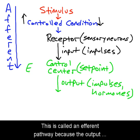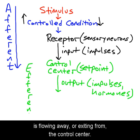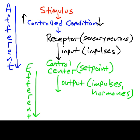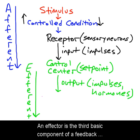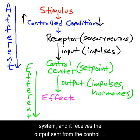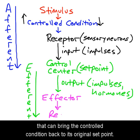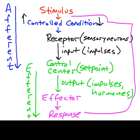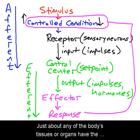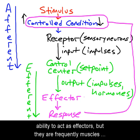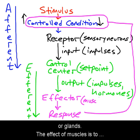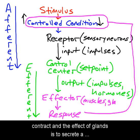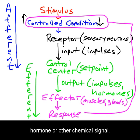This is called an efferent pathway because the output is flowing away from, or exiting, the control center. An effector is the third basic component of a feedback system; it receives the output sent from the control center and generates a specific response or effect that can bring the controlled condition back to its original state. Just about any of the body's tissues or organs have the ability to act as effectors, but they are frequently muscles or glands. The effect of muscles is to contract, and the effect of glands is to secrete a hormone or other chemical signal.